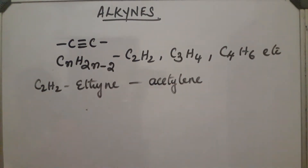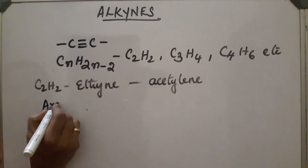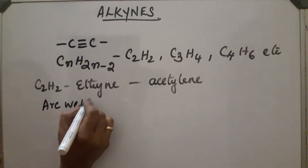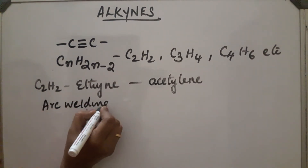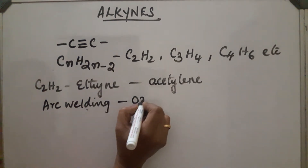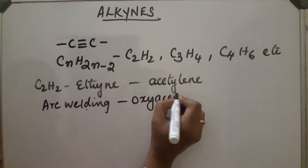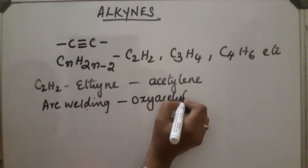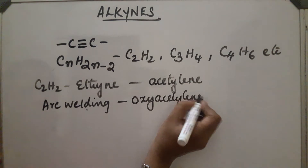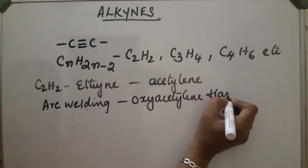Acetylene can be used in arc welding, in the form of an oxyacetylene flame. This is a mixture of oxygen gas and acetylene.